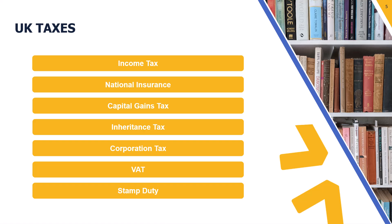We can divide these UK taxes into various groups. One of the most important distinctions is between taxes paid by individuals and taxes paid by companies. This is a really important distinction because students often become confused — they might be answering a question on an individual but start using taxes only applicable to companies, or vice versa. So it's really important to make this distinction up front.